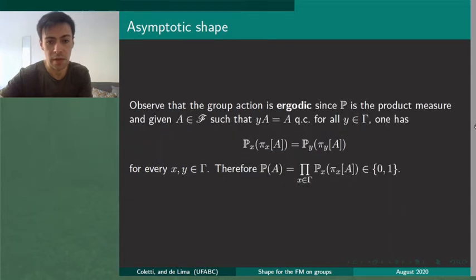The action is ergodic because it preserves the probability measure and when we apply it to our definition P is a product probability measure. We have this infinite product which yields 0 or 1.